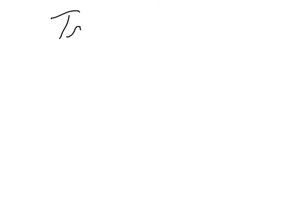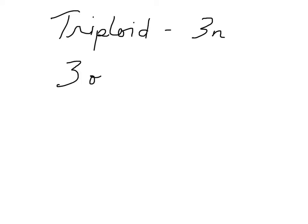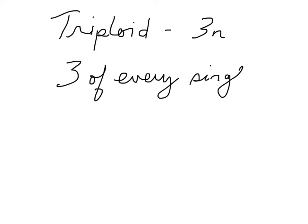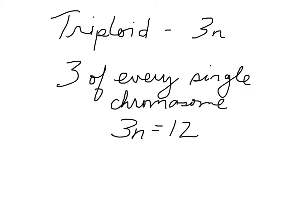If you're an organism that happens to be triploid — that means you are 3n. You have three of every single chromosome. Let's say you're an organism that has just a total of 12 chromosomes. So if 3n equals 12, that means — very simple math — divide 3 on each side, so n equals 4.